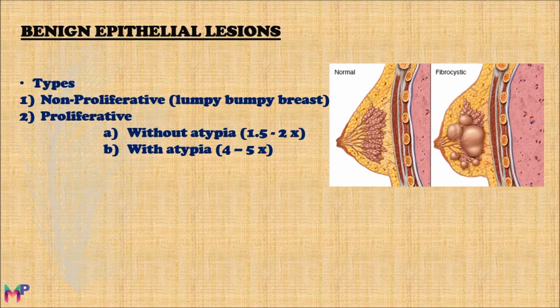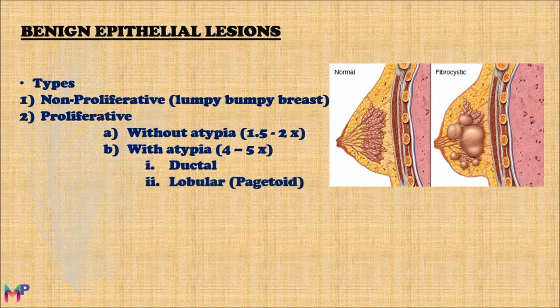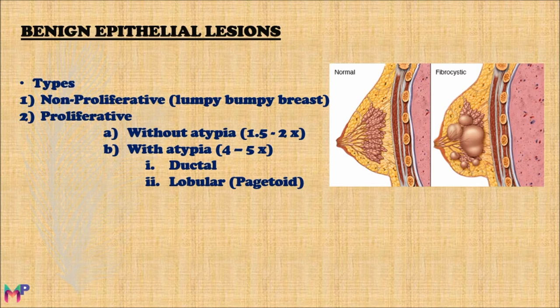The proliferative type with atypia features cells that are similar in characteristic to each other. The histological and morphological features are similar to carcinoma in situ of the breast, and there are genetic changes in the cells of these lesions. The proliferative type with atypia is further divided into the ductal type and the lobular type. The ductal type closely resembles ductal carcinoma in situ, while the lobular type closely resembles lobular carcinoma in situ. The lobular type is also known as Pagetoid disease because its features resemble Paget disease of the breast.